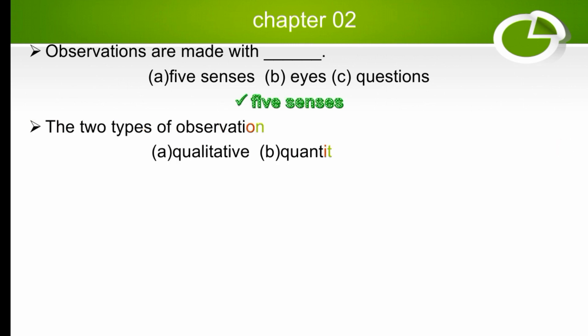The two types of observation are which? The options are qualitative, quantitative, or both. Both qualitative and quantitative are types of observation, so the right answer is both.